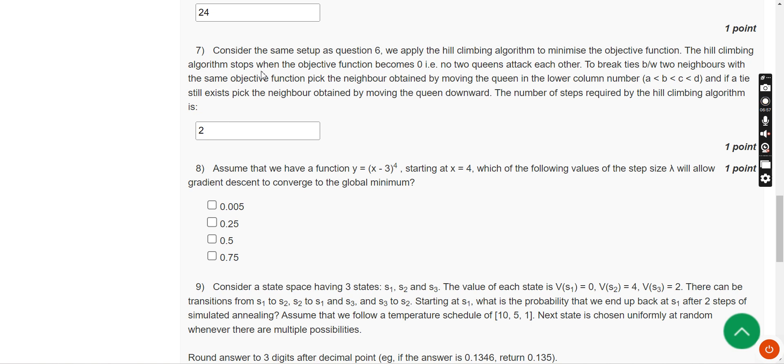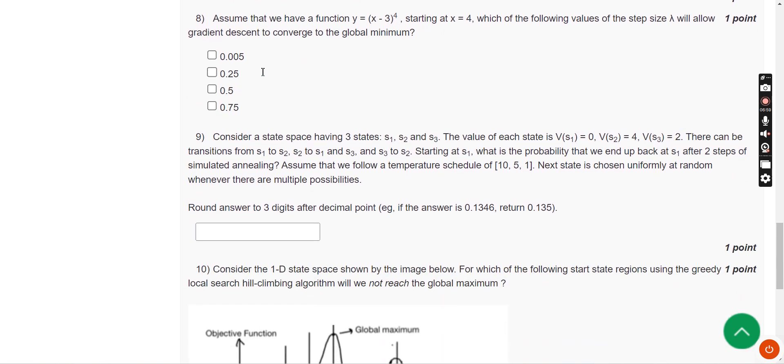Now let's move on to the eighth question. Assume that we have a function y equals (x minus 3) to the power 4, starting at x equals 4. Which of the following values of the step size will allow gradient descent to converge to the global minimum? For the eighth question, the probable answer I have got is only one option, that is the second one: 0.25.